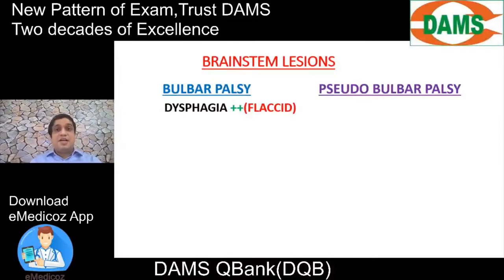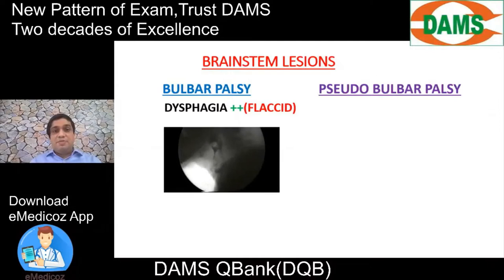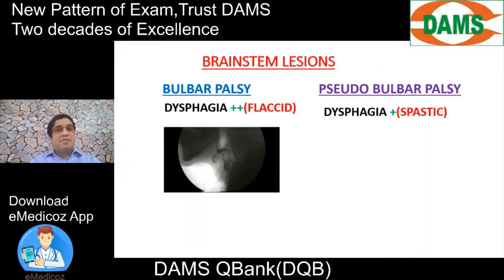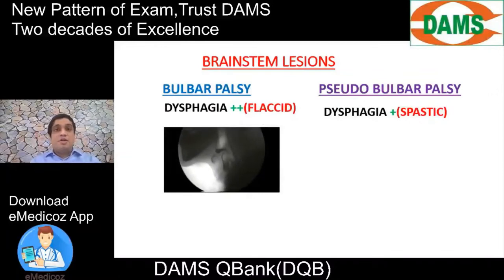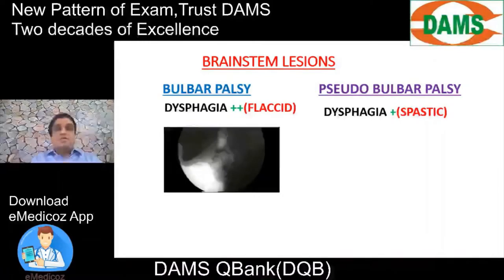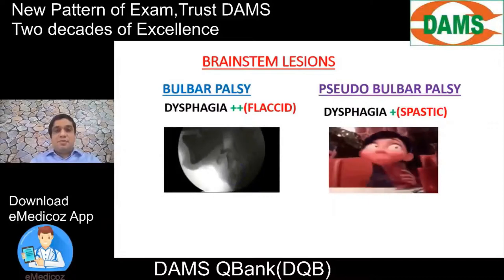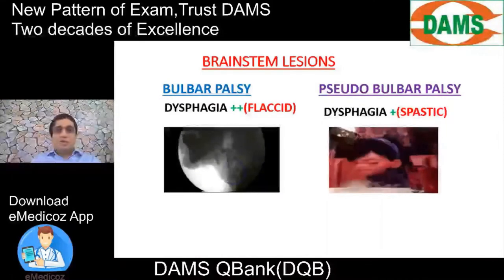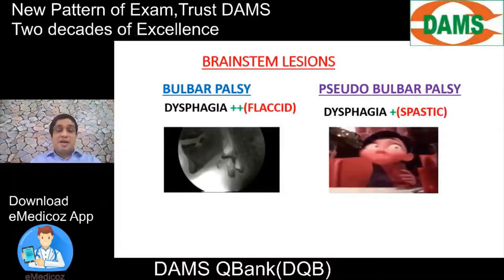In flaccid dysphagia, the food bolus or water gets stuck in the throat due to poor swallowing. In pseudobulbar palsy, the lesion is corticobulbar — supranuclear. Supranuclear lesions are UMN, and in UMN we find spasticity. So dysphagia in pseudobulbar palsy is spastic; when the person swallows water there is contraction of the pharyngeal muscle and the water may regurgitate through the nose — nasal regurgitation.